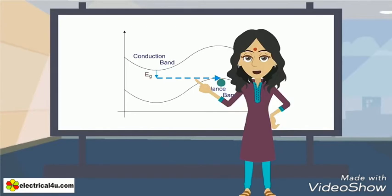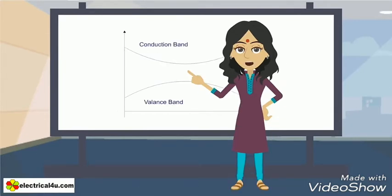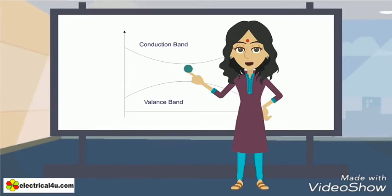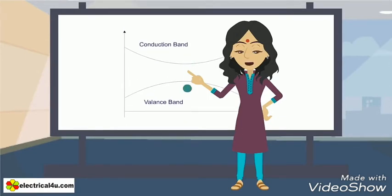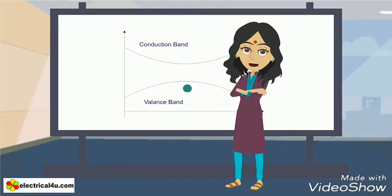In direct gap semiconductor, the maximum of valence band and minimum of conduction band occur at the same electron momentum. Hence, there will be no change of momentum of electrons during migration from conduction band to valence band. So the photons originated due to that migration have not to provide momentum to electrons.